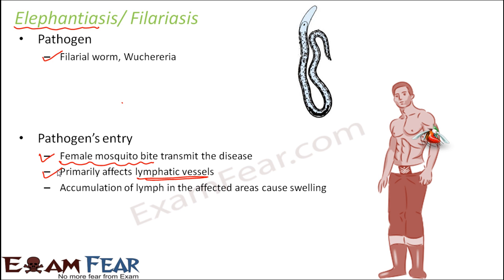Accumulation of lymph in the affected area causes swelling. Just as blood vessels contain blood, lymphatic vessels contain tissue fluid or lymph. When too much lymph accumulates in a particular area, the lymphatic vessels swell, and that area of the body also gets swollen. This causes severe inflammation of organs.